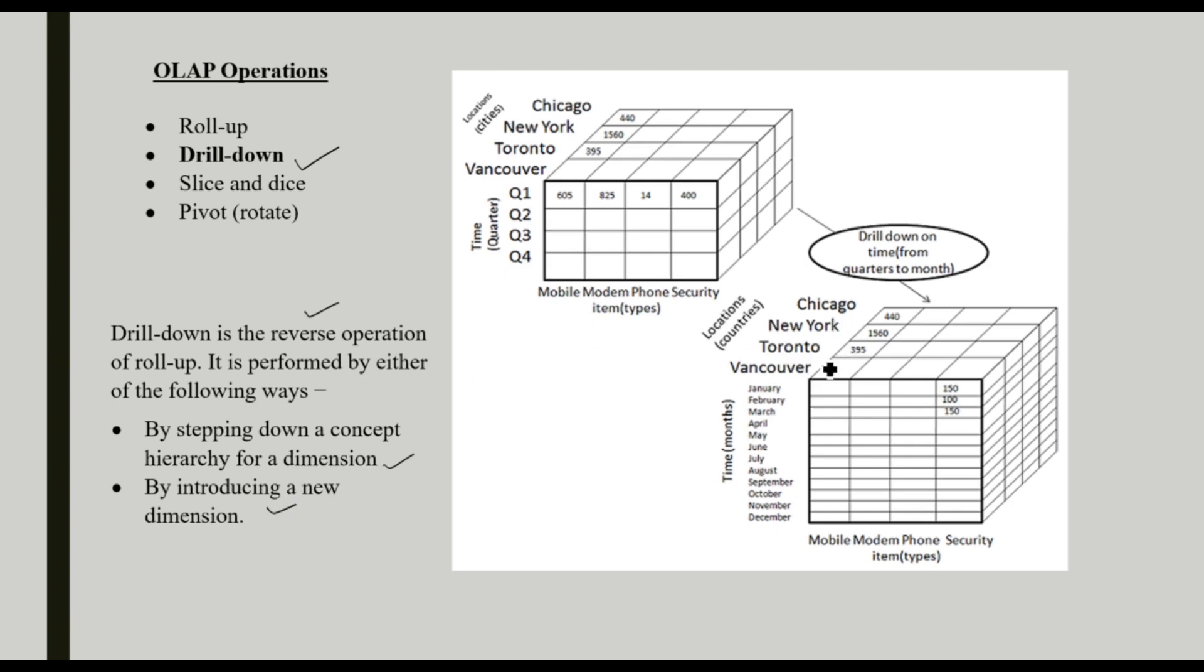This is the example of the drill-down operation. Drill-down on time, we are looking at more detail of sale according to time. In this data cube, the location is there, time is there, item is there. The time sales are listed in a quarterly manner, like quarter 1, quarter 2. Here, we are drilling down this time dimension. In quarter 1, 3 months are there.